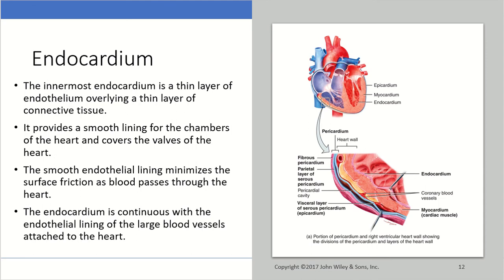The third layer of the heart wall is the endocardium — the innermost layer. It is a thin layer of endothelium overlaying a thin layer of connective tissue. It provides a smooth lining for the chambers of the heart and covers the valves. The surface endothelial lining minimizes surface friction as blood passes through the heart, helping blood cells last a little longer. The endocardium is also continuous with the endothelial lining of the large blood vessels that attach to the heart.